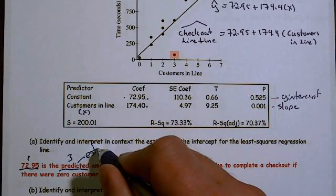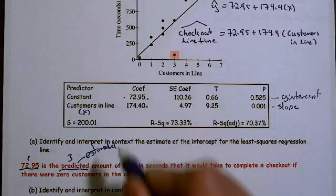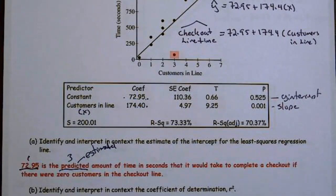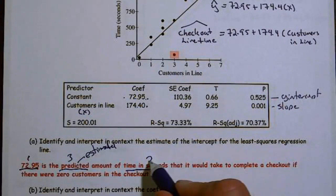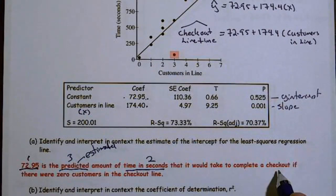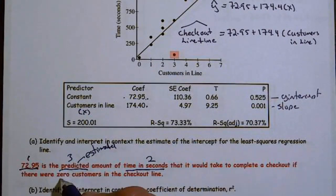So this right here, correctly identifying, was the first part of this. You needed to use the word predicted, estimated, or on average.